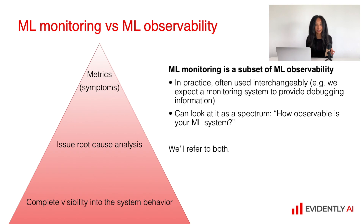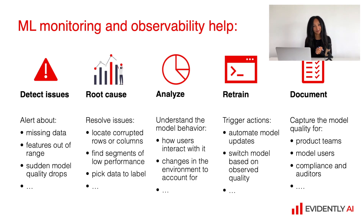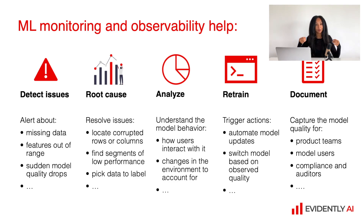Those things are quite different. Unfortunately, sometimes both terms are used interchangeably, but there are differences. I suggest looking at machine learning monitoring as a subset of machine learning observability, and during the course we are going to discuss both. We can look at the whole spectrum of how observable our machine learning system is. Generally, machine learning monitoring and observability helps us detect a lot of issues like missing data, features which are out of expected range, data drift, concept drift, or sudden model quality drops. It helps us perform root cause analysis and locate, for example, which exact columns are corrupted, or detect which rows are corrupted or which segments are underperforming. It helps us understand model behavior in general, and provides insights on how users interact with the model and if there are any changes in the environment.